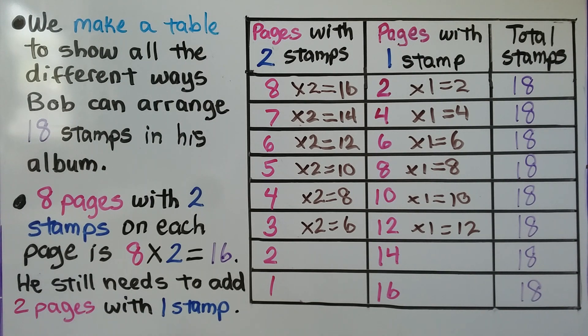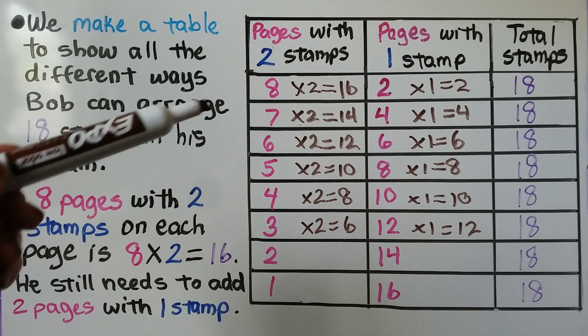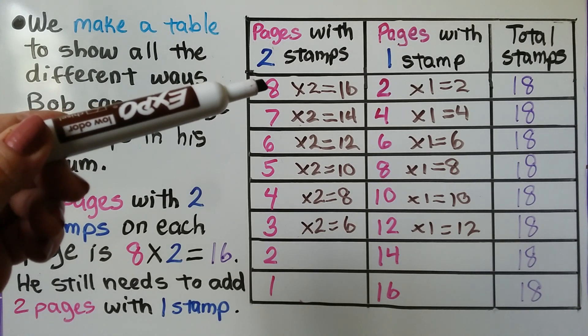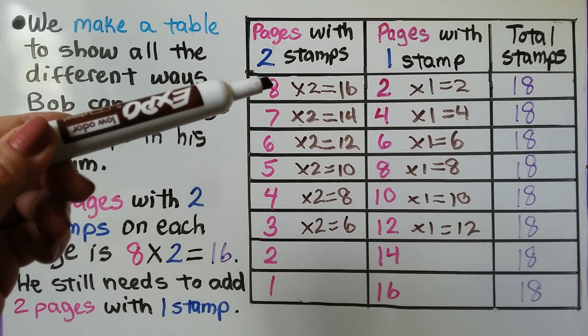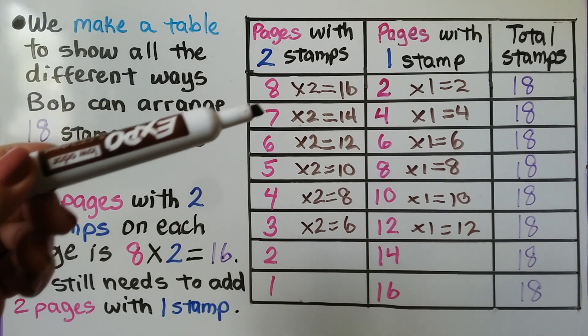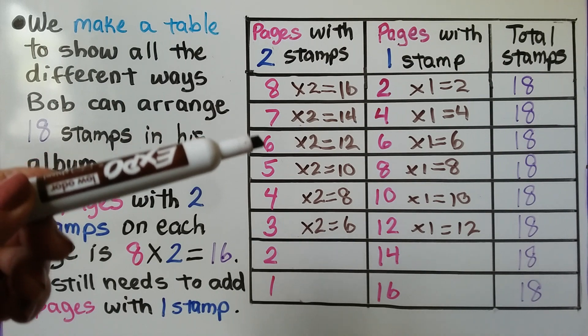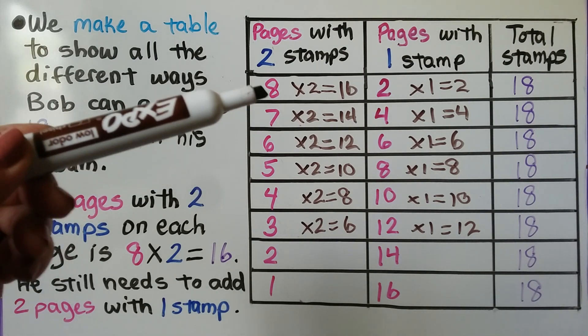Do you see a pattern? Do you notice a pattern here? It's going for the pages with two stamps each — eight pages, seven pages, six pages — these all have two stamps each and it goes eight, seven, six...